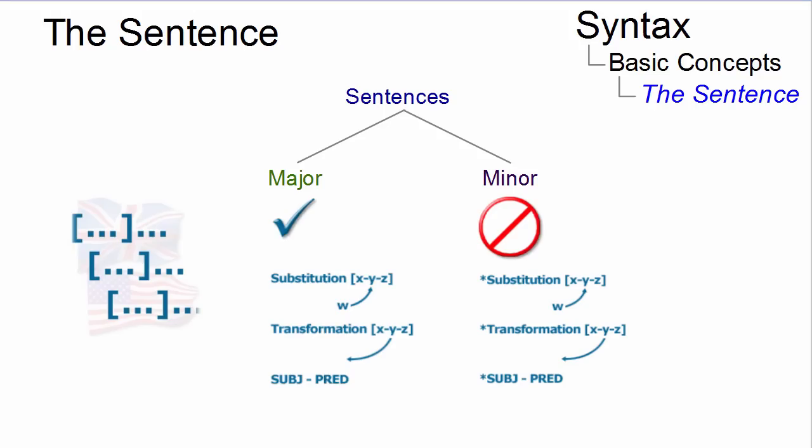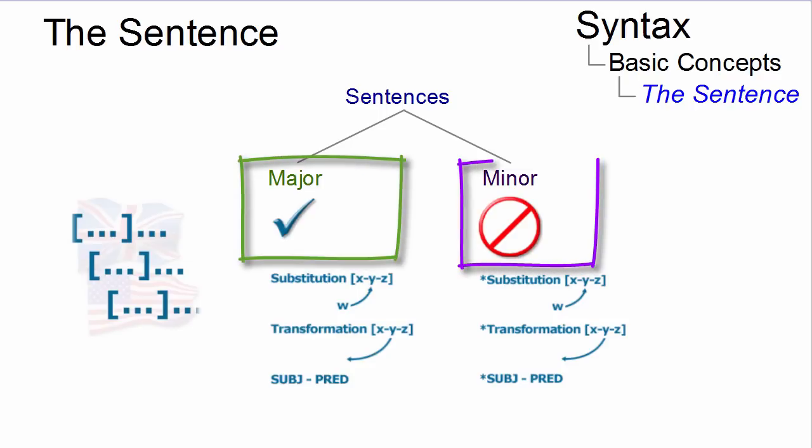The sentence is the highest ranking unit of syntax. Since there are constructions that can hardly be defined as standard sentences, a distinction is drawn between two sentence types: major sentences and minor sentences.